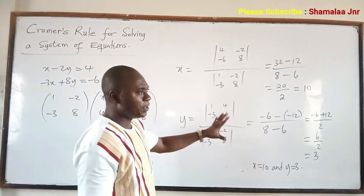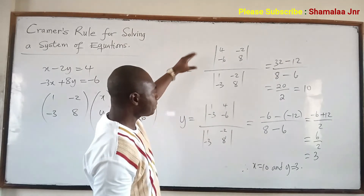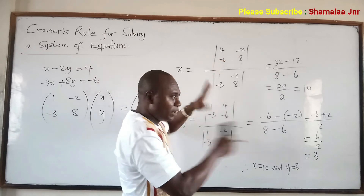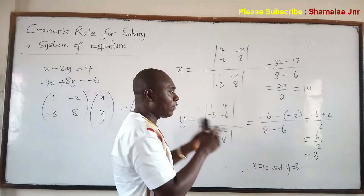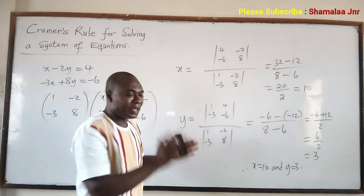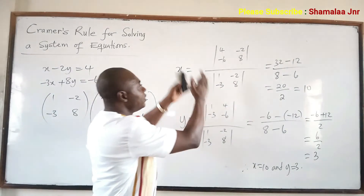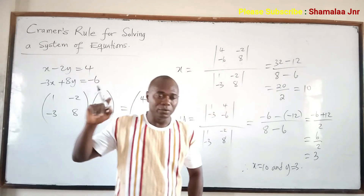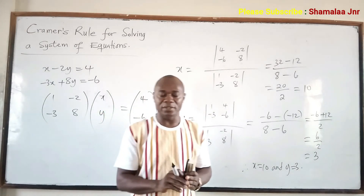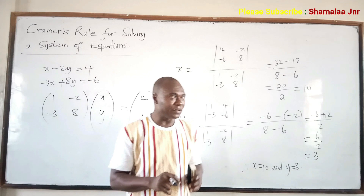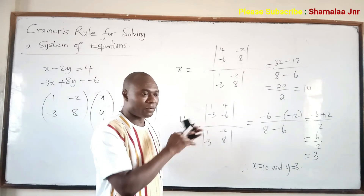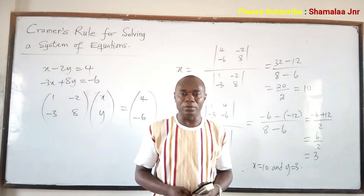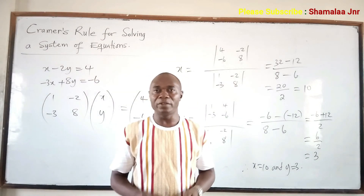Now, if you have three equations, then it means we have to find the determinant of 3×3 matrices. When you have three equations, the resulting matrix will be 3×3. I have a video on how to find the inverse of a square matrix, and in that video I treated how to find the determinant of matrices. Thank you very much for your attention. For more videos, subscribe to my YouTube channel if you have not done so.